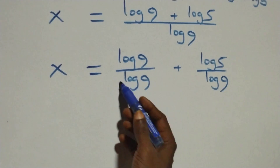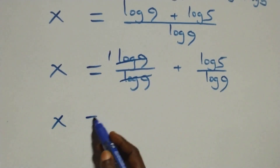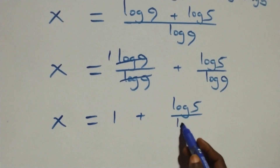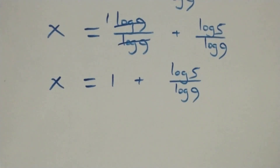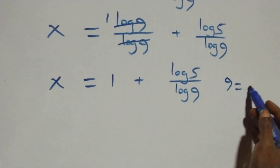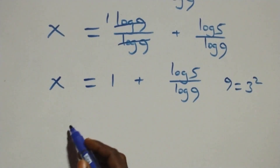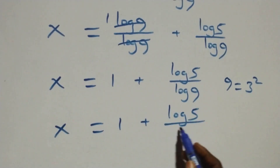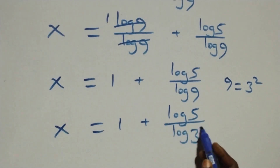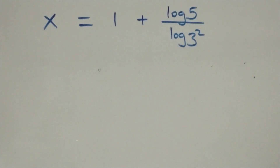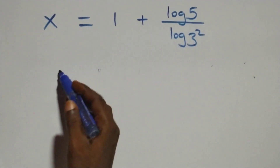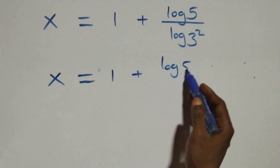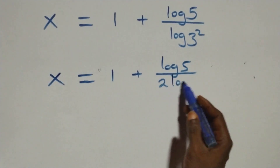Here we have log 9 canceling each other, giving 1, plus log 5 over log 9. We can express 9 as 3 times 3, that is 3 squared. So what we have becomes x equals to 1 plus log 5 over log 3 squared. Applying the power log rule, 2 comes down, and what we have becomes x equals to 1 plus log 5 over 2 log 3.